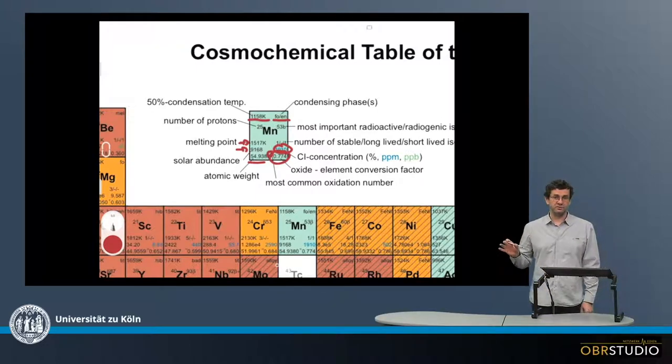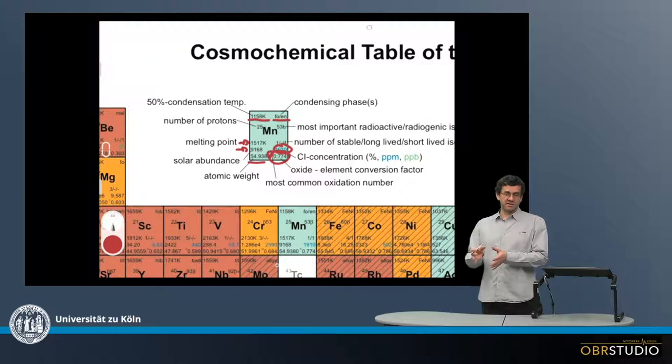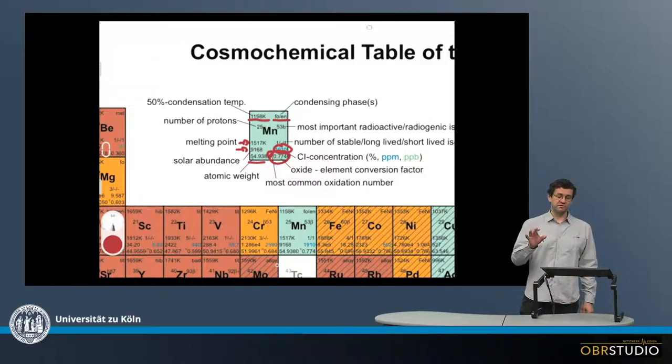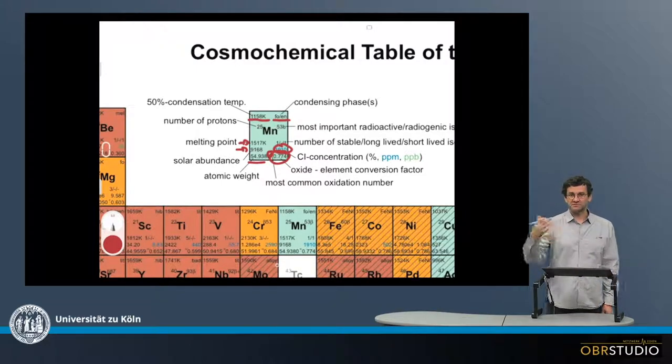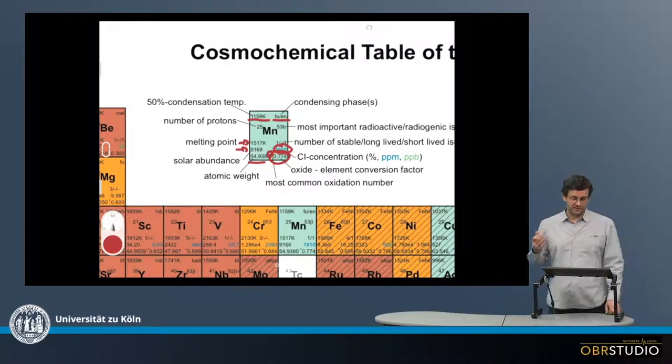And this is also quite handy here, this is an oxide element conversion factor, which means that if in a publication there is not manganese but manganese oxide, you can use this conversion factor to easily recalculate manganese from manganese oxide. But also the other way around, if there is manganese and you need manganese oxide, you just take the inverse of this conversion factor.